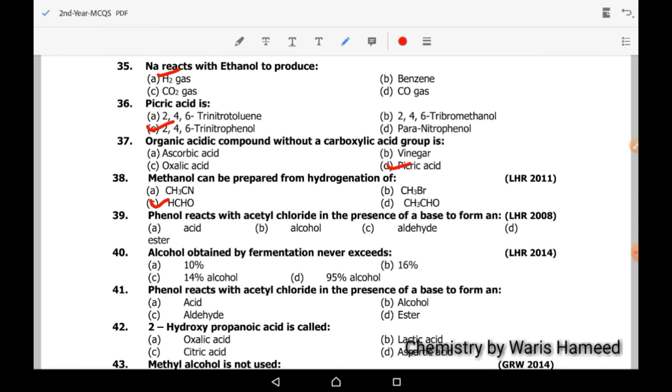In case of MCQ 39, phenol reacts with acetyl chloride in the presence of a base to form an ester. So correct option is D. Alcohol obtained by fermentation never exceeds 14% alcohol.